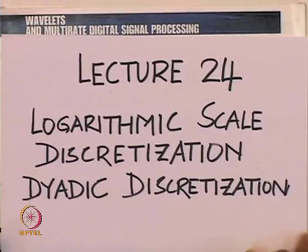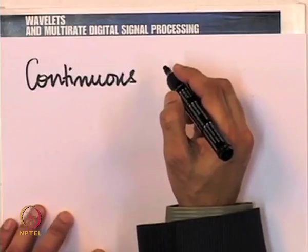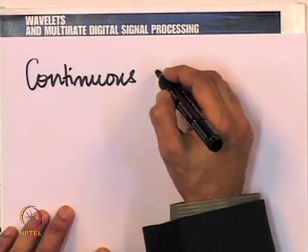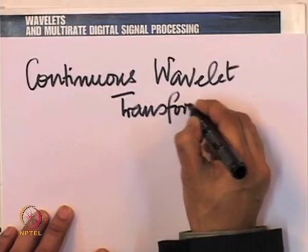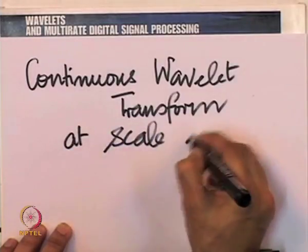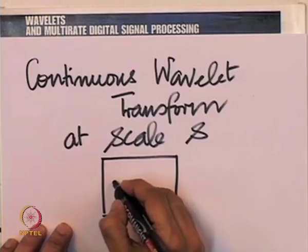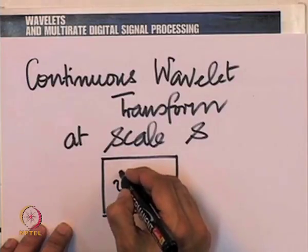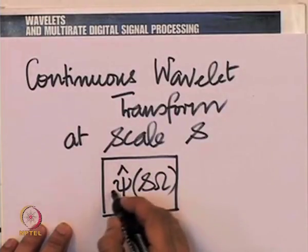Let us look once again at what the continuous wavelet transform does. The continuous wavelet transform essentially operates like a filter both in synthesis and in analysis. At scale S, it is essentially a filtering operation with a frequency response given by psi-cap S-omega, ignoring constants.